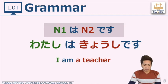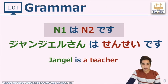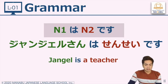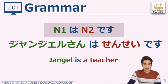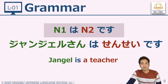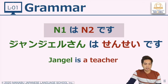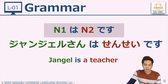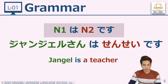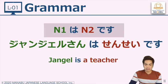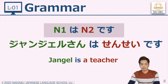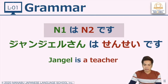Not only can we describe ourselves, but we can describe other people. For example, we will describe Miss Jangel. Jangel-san — 'san' is a name suffix attached to a person's name to show politeness, translated in English as Mr. or Miss. The name Jangel is written in katakana because she is not Japanese. Jangel-san wa, followed by particle wa to indicate Jangel-san is our subject. What is Jangel-san? She is sensei desu. Sensei in English means a teacher.